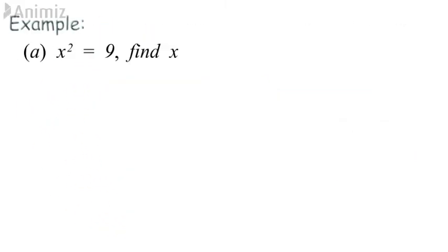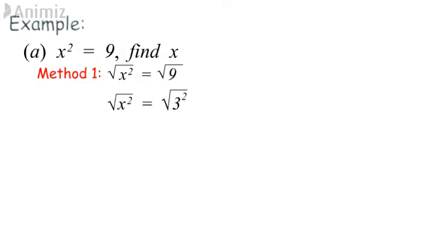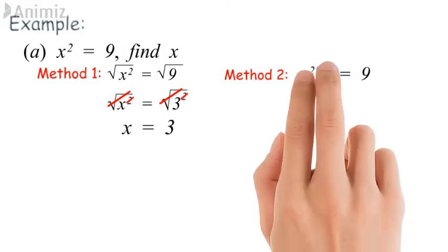Example A: to find the value of x, there are two methods. Method 1 using square roots: square roots are used to eliminate squares. In an equation, if we take the square root of the left-hand side, we must take the square root of the right-hand side as well. Since 9 = 3², the square root of x² equals the square root of 3², so x = 3. Method 2 using reciprocal: the reciprocal of 2 is 1/2. Multiplying the indices on both sides by 1/2 gives x = 3.